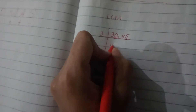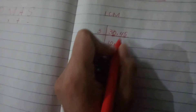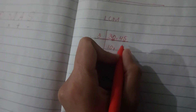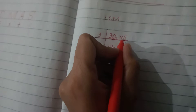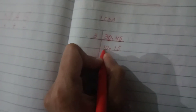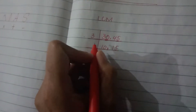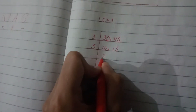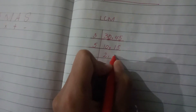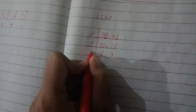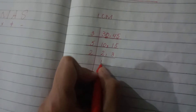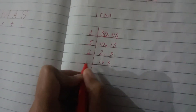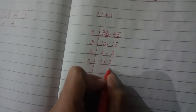So students, what do we do? Let's take 3. 3 times 10 is 30. 3 times 5 is 15. Now 5 times 2 is 10, and 5 times 3 is 15. 2 times 1 is 2, and 3 times 1 is 3.